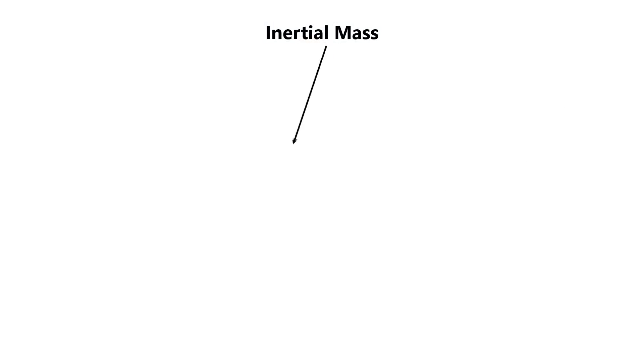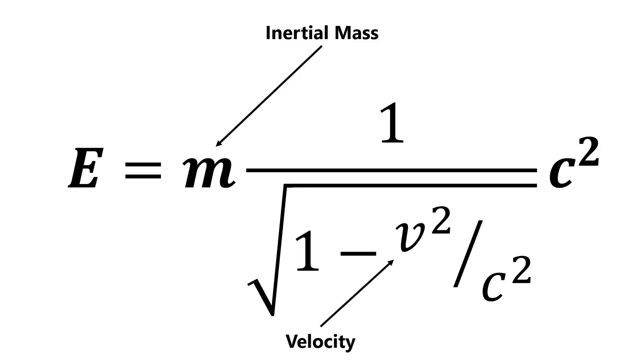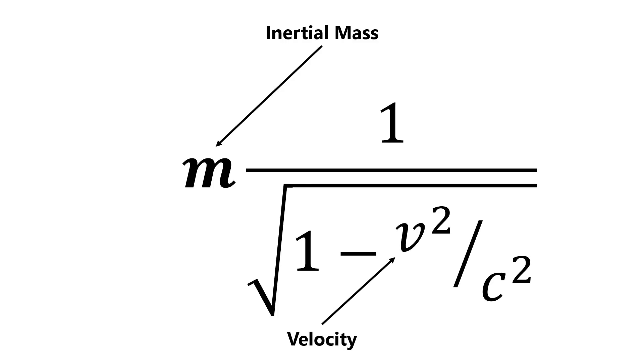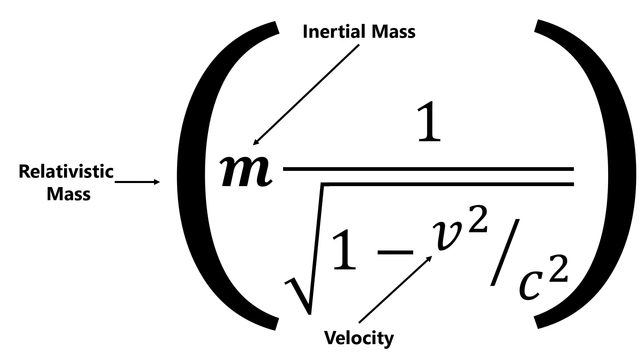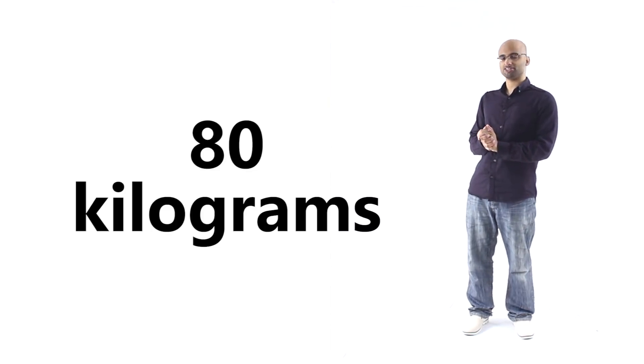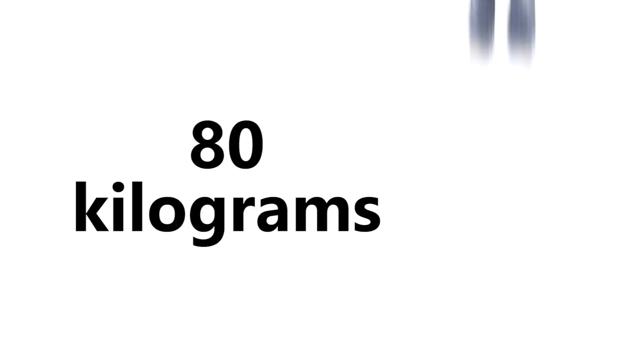We are not interested here in relativistic mass, which changes Einstein's equation quite a bit and depends on the velocity of such an object. To give you an example for why relativistic mass is a problem, let's imagine that I have a twin who has the same exact mass as me, 80 kilograms.